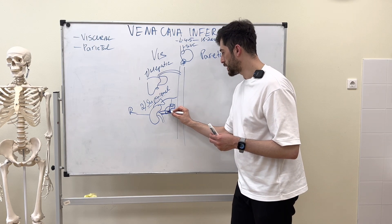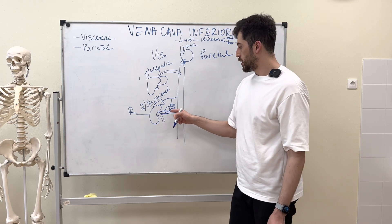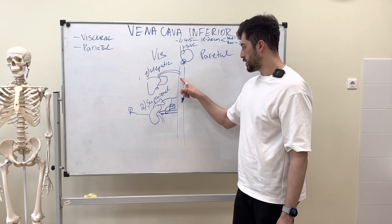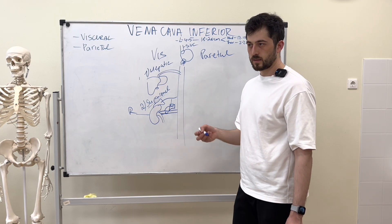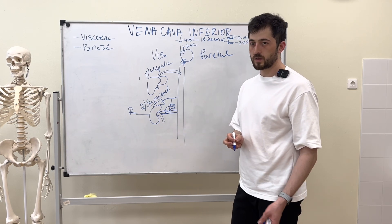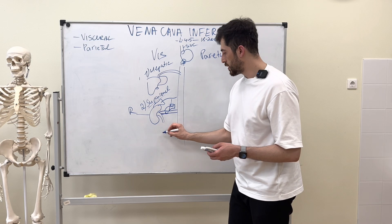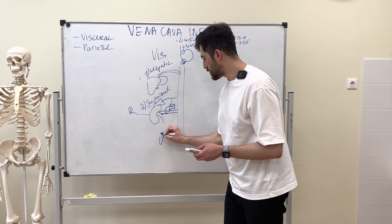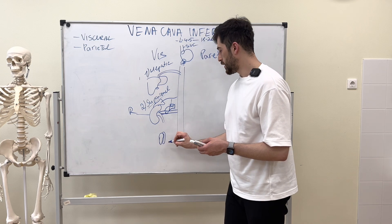The next visceral branch is the renal vein. The renal vein drains into the inferior vena cava. Another important visceral branch is the testicular vein in males.